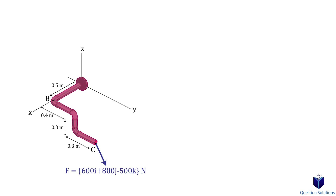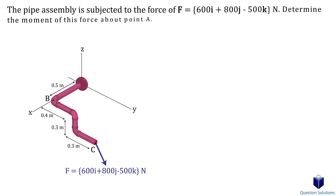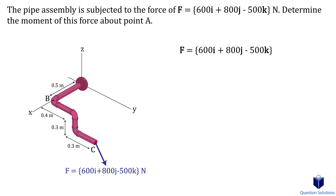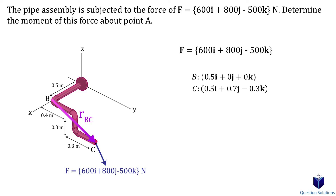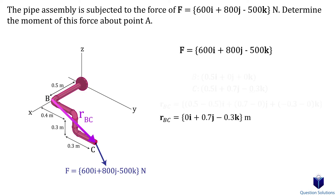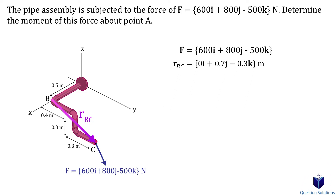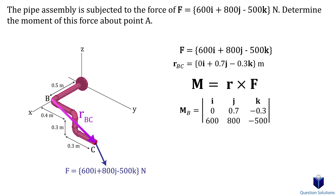Let's take a look at this problem, where we need to find the moment created about point B when a force is applied at point C. Since the force is already given to us in Cartesian form, we can set it aside. The only thing we need is a position vector from B to C. Let's write down the locations of points B and C, then take the cross product between the position vector and the force. And that's our answer.